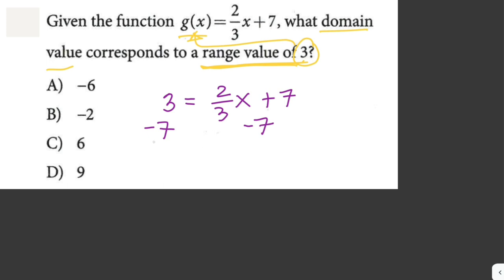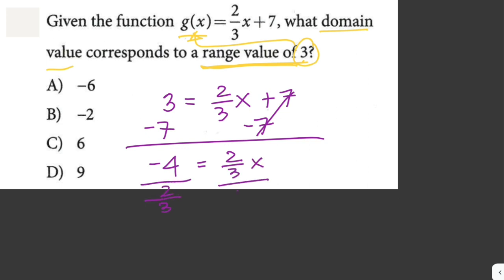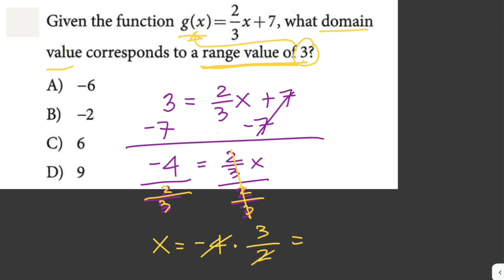We subtract 7 from both sides: negative 4 equals 2/3 x. Then we divide both sides by 2/3, which means multiplying by 3/2. So x equals negative 4 times 3 over 2. Since 4 divided by 2 equals 2, we get x equals negative 6. So the domain value is negative 6, and the answer is letter A.